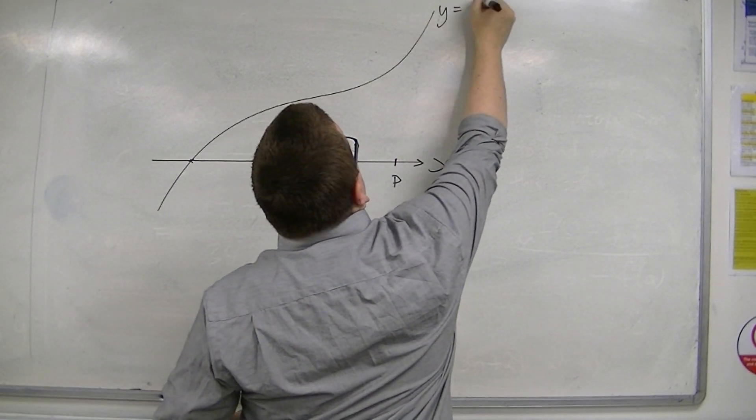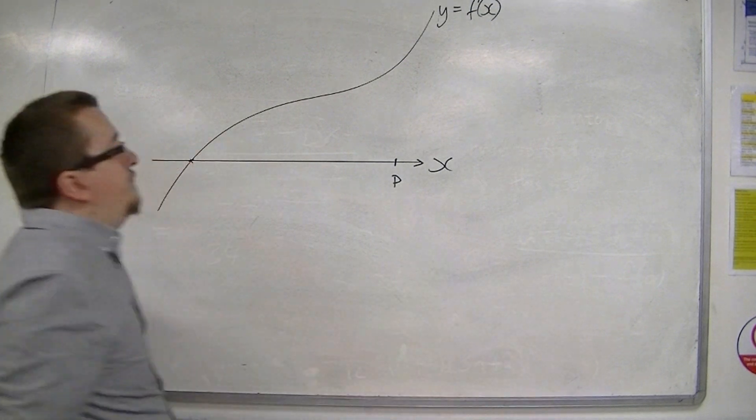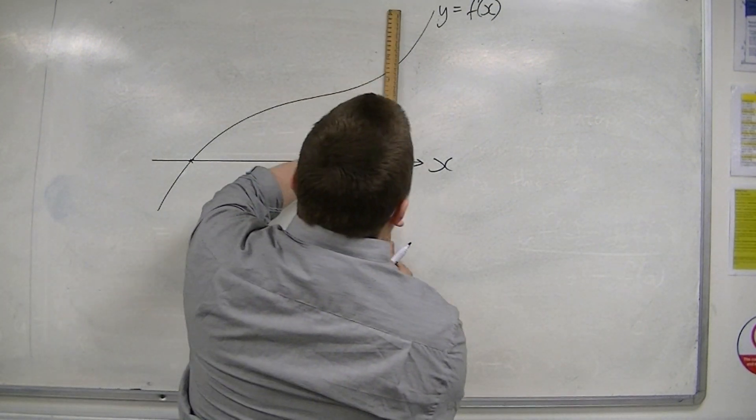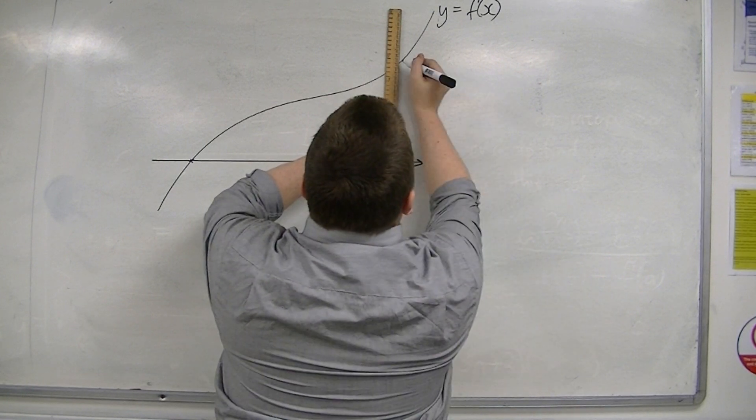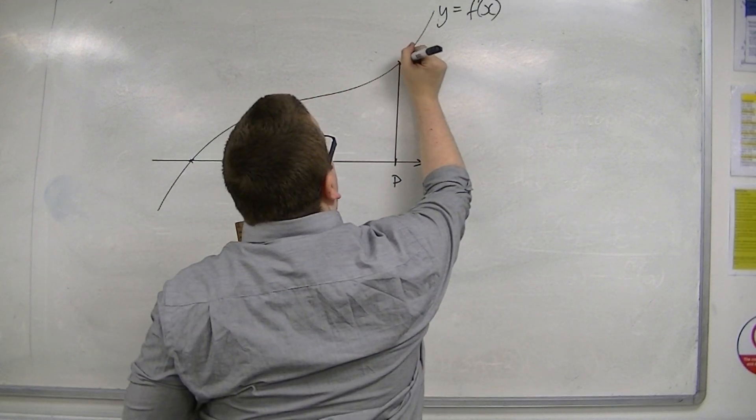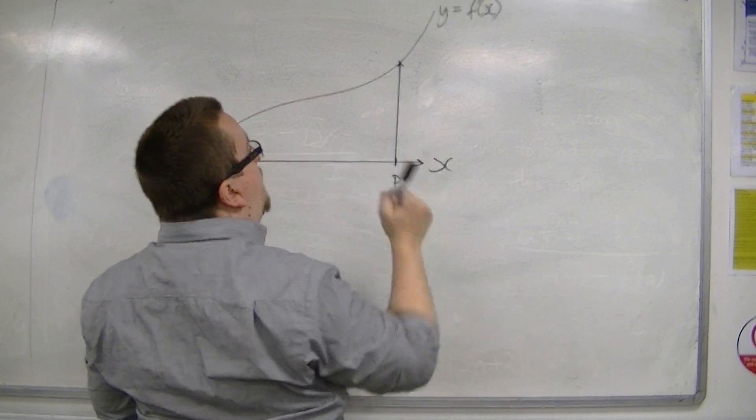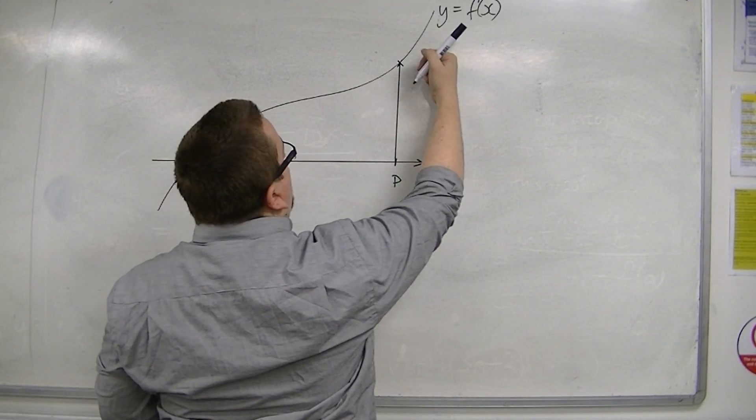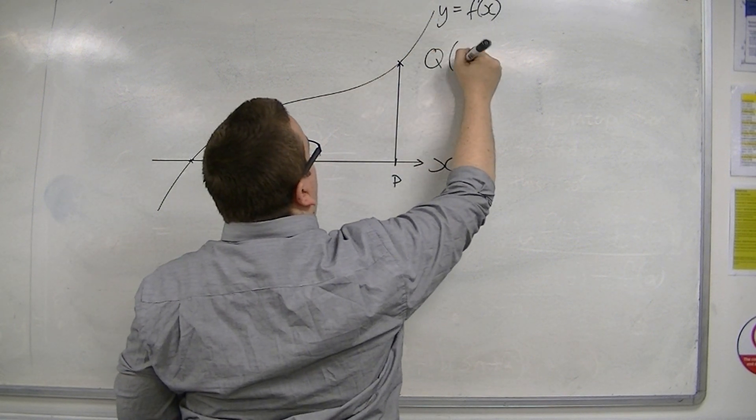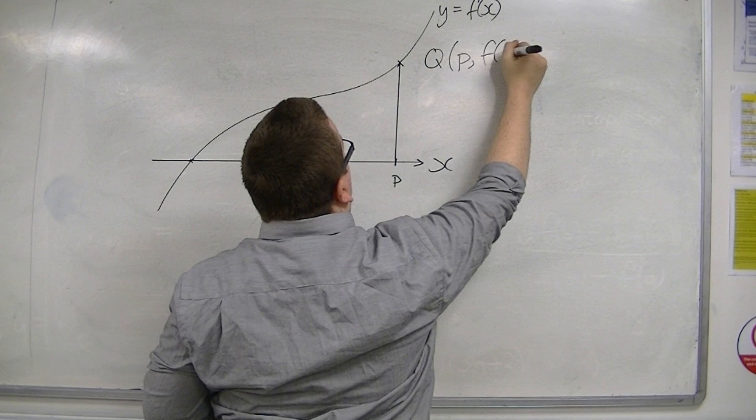This is going to be my y is equal to f of x. So if I'm looking at that particular point P, then where it appears on the curve will have coordinates P, f of P. Let's call that point Q. So Q will have the coordinates P, f of P.